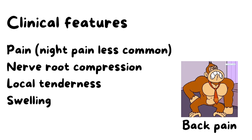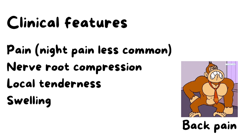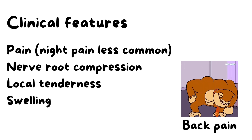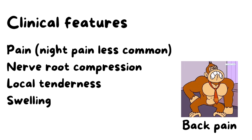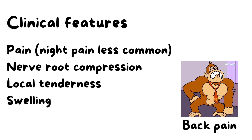Since a common site for osteoblastoma is the spine, if it occurs in the vertebral body near the nerve roots, it can cause compression of the nerve root leading to neurological deficits such as weakness of the lower limb, numbness of the lower limb, or bowel and bladder changes in the form of urinary retention or incontinence. There can also be back pain due to nerve root compression.